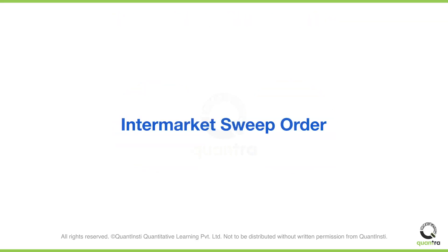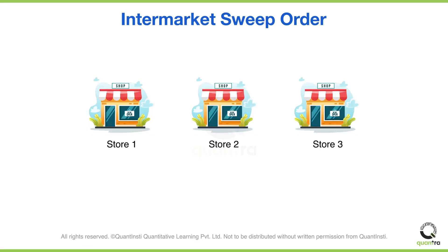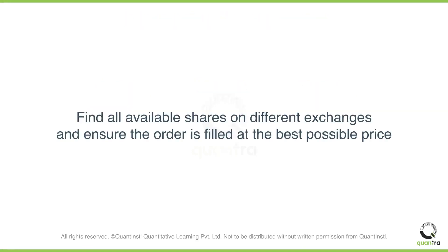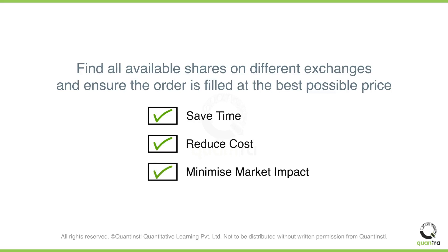Next, we have the intermarket sweep order. Suppose you are buying 10,000 stocks — with ISO you will be able to buy these stocks across multiple exchanges simultaneously. It's like shopping for the same item at different stores to get the best price. The goal is to quickly find all available shares on different exchanges, ensuring the order is filled at the best possible price. By using an ISO, traders can save time, reduce trading costs, and minimize the market impact of their large orders.